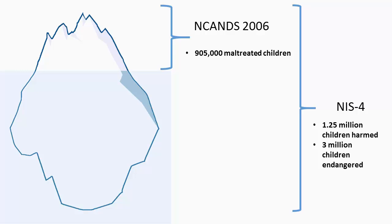The NIS design assumes CPS-investigated cases represent only the tip of the iceberg of actual child maltreatment incidents. In 2006, NCANS data reported 3.3 million CPS referrals were made alleging the maltreatment of 6 million children. 905,000 children were determined to be victims of abuse or neglect. Looking deeper, in the one-year study period from 2005 to 2006, NIS-4 found 3 million children were endangered, and of them 1.25 million were harmed by child maltreatment.